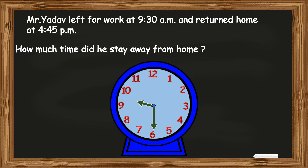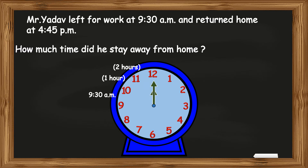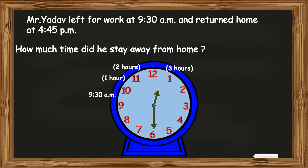Mr. Yadav left at 9:30 a.m. By 10:30 a.m. he was away from home for 1 hour. By 11:30 a.m. it was 2 hours. 30 minutes after 11:30 a.m. the time is 12 noon. 30 minutes after 12 noon it is 12:30 p.m., and by then Mr. Yadav was away from home for 3 hours. By 1:30 p.m. it was 4 hours.